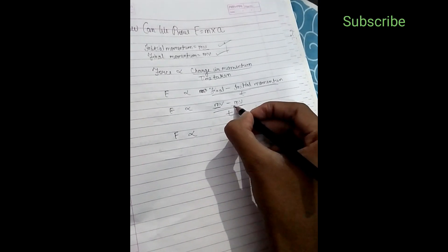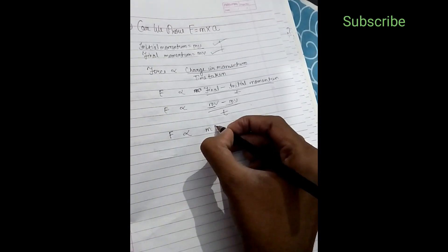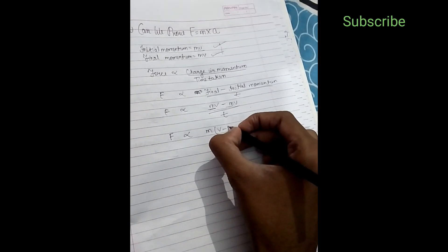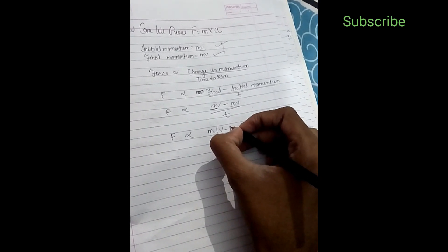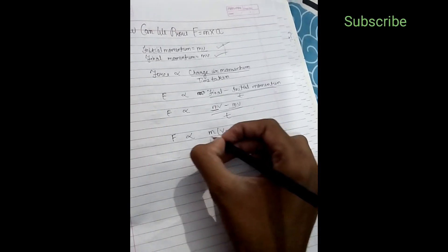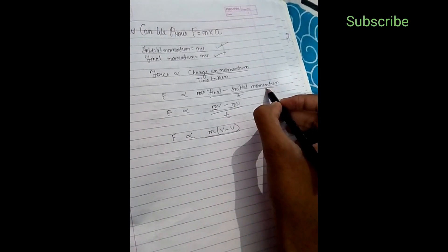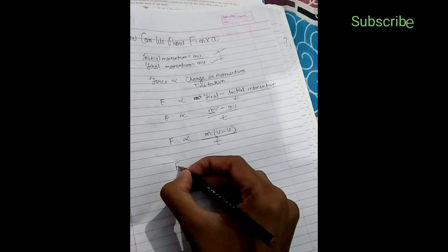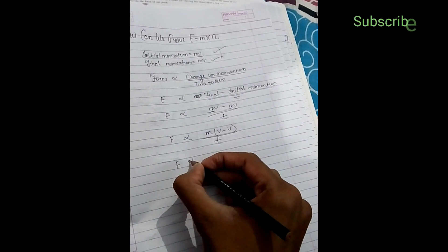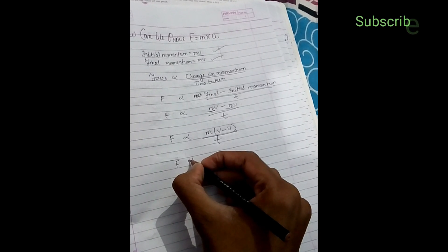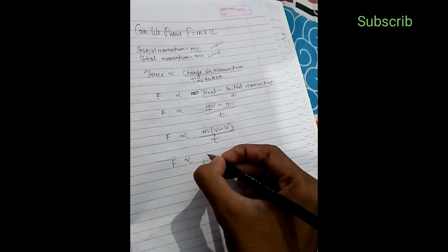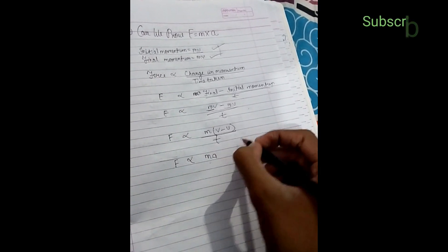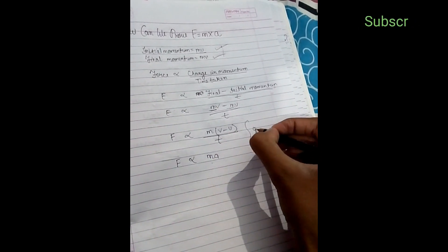Here M is common, then we rewrite in that form: final velocity minus initial velocity by time taken. So force proportional to this form, then M times.